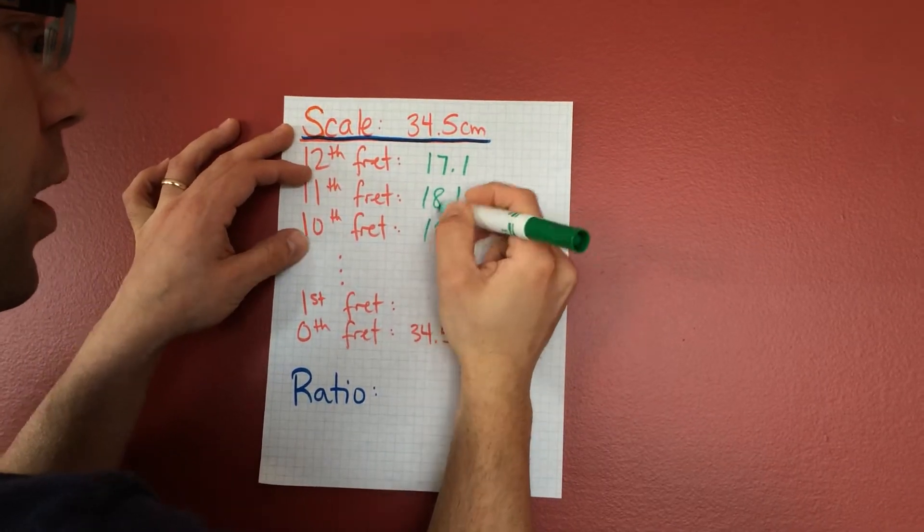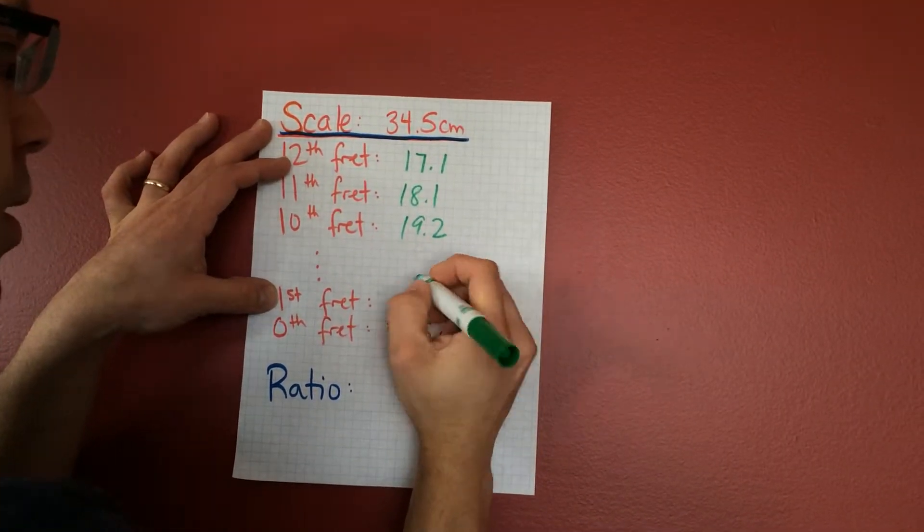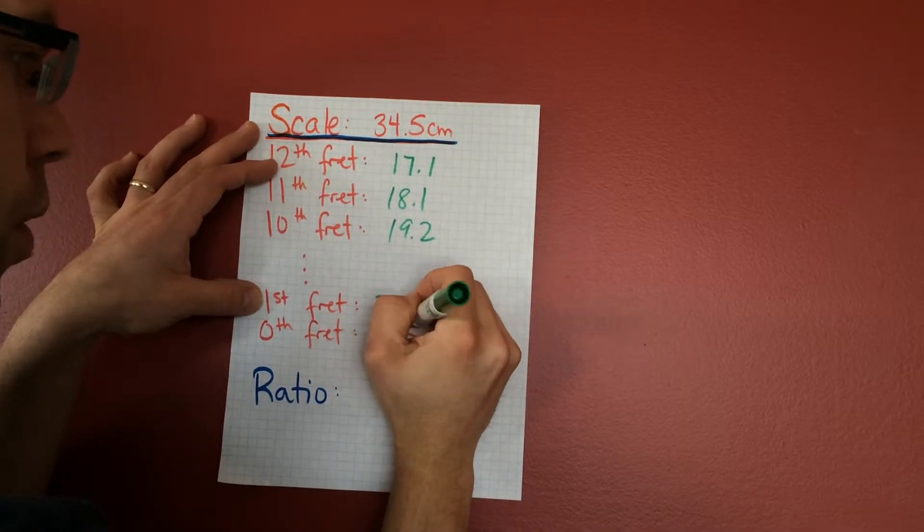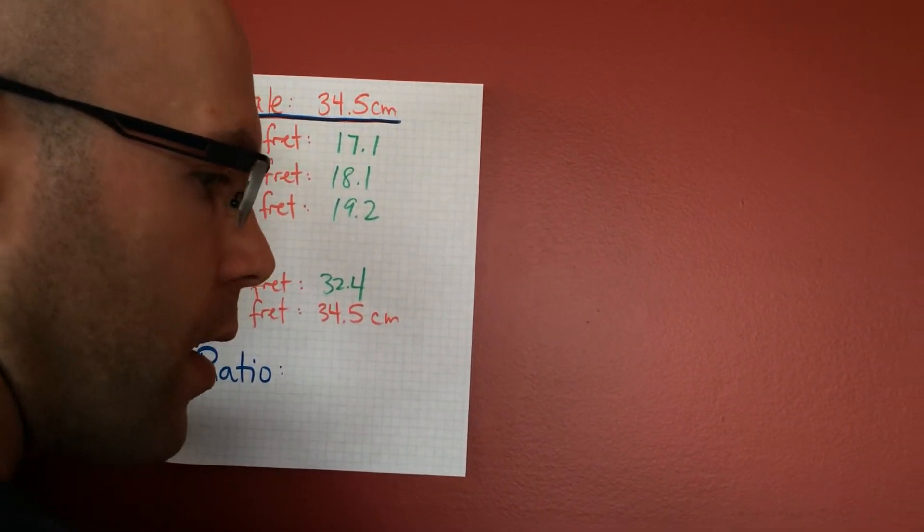And then 19.2 cm. And so on. And the last one, the first fret, is 32.4 cm. So again, let's take the ratio.